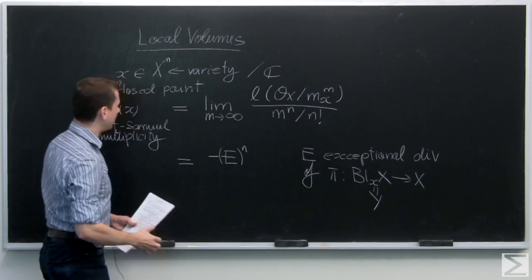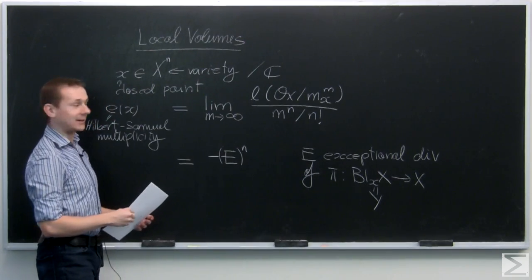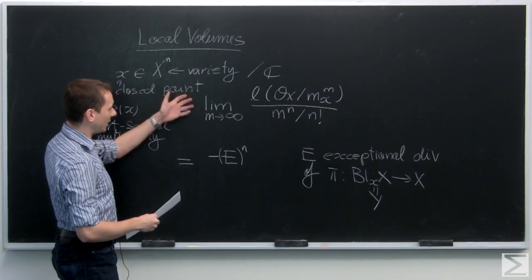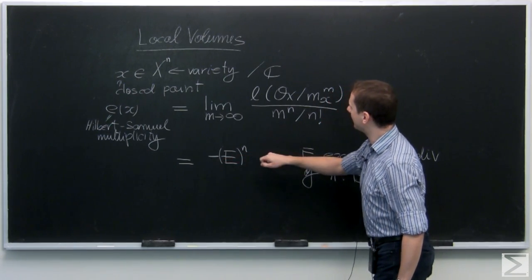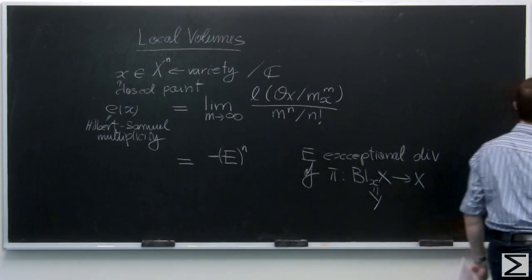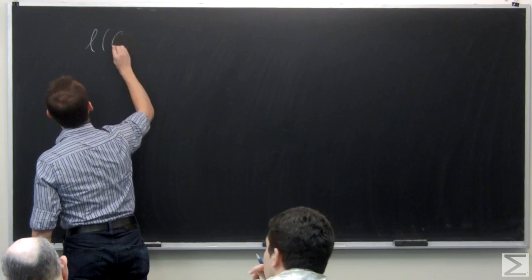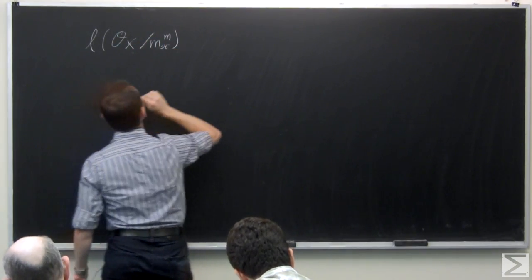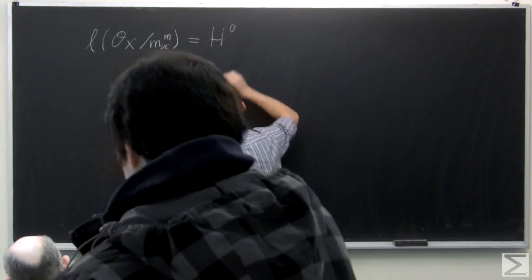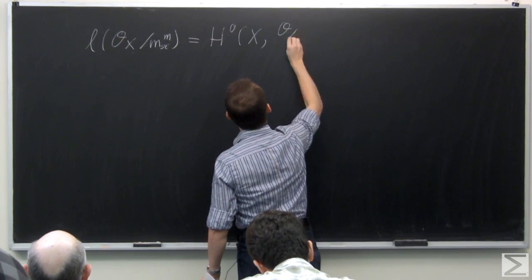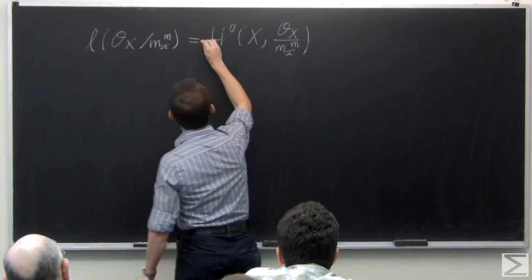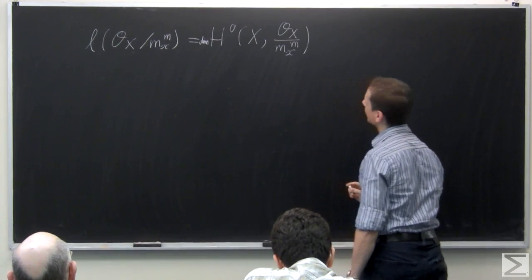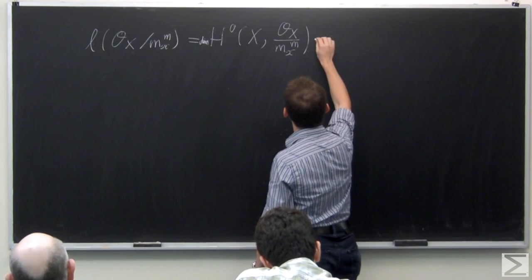Is that a lim-sup? Initially it's lim-sup, but one can show that it's a limit. I would like to introduce a new perspective that links these two and uses local cohomology. Instead of looking at it as the appropriately signed top-self intersection of E, I would like to see this as a local cohomology invariant. We observe that the length of O_X / m_x^m can be seen as the dimension of global sections of that module, because we're working over an algebraically closed field.